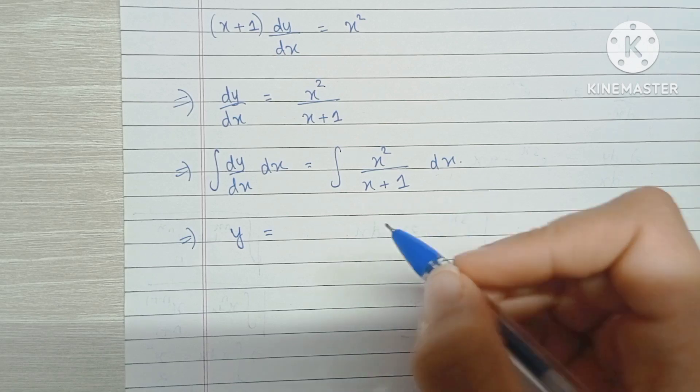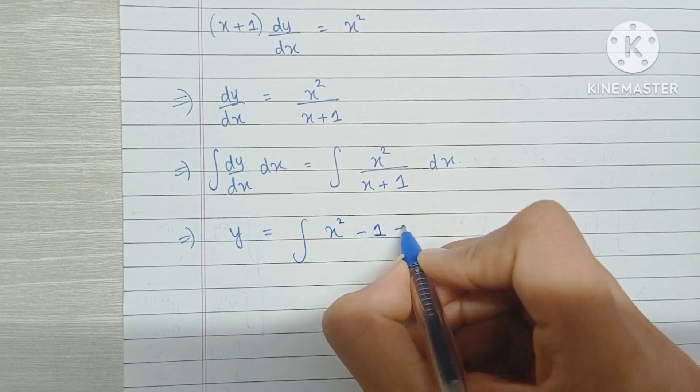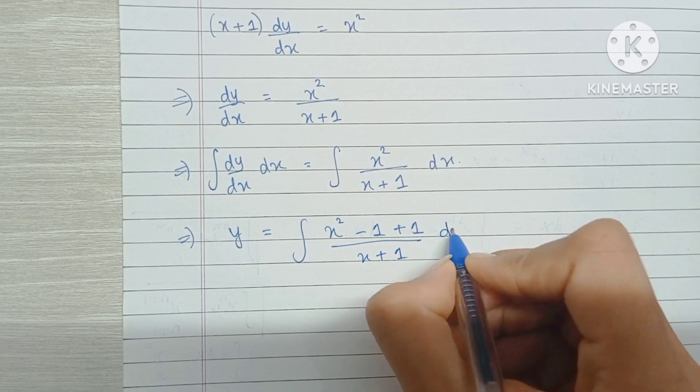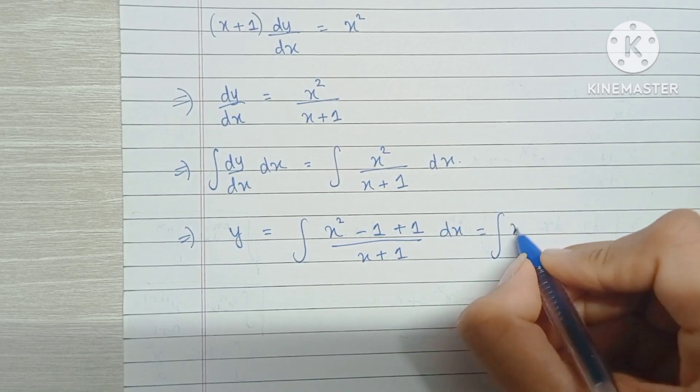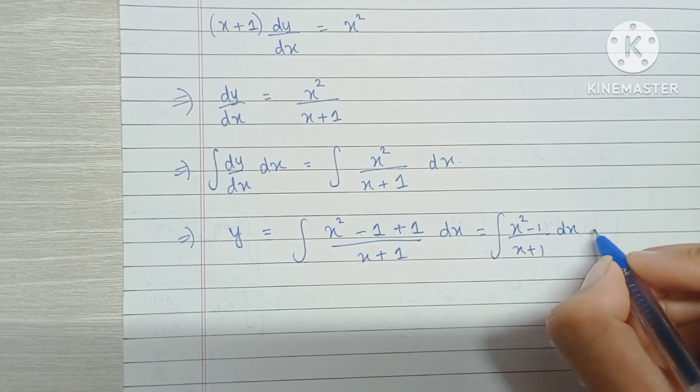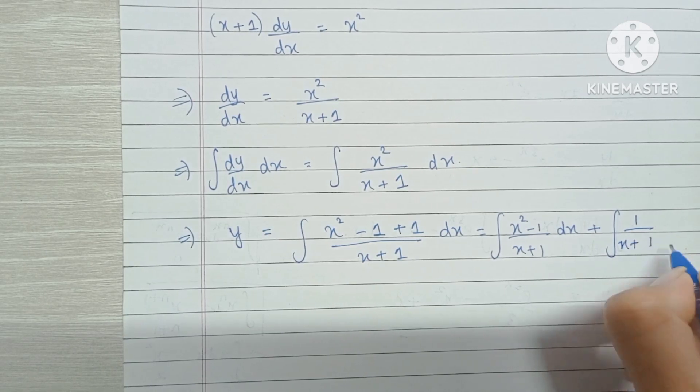So we're going to be using a trick. I'm going to do x squared minus 1 plus 1 so that the net effect is 0, and then we can write this as two separate fractions x squared minus 1 upon x plus 1 dx plus the integral of 1 upon x plus 1 dx.